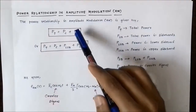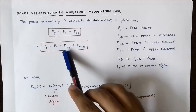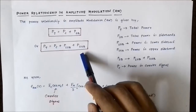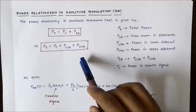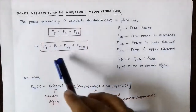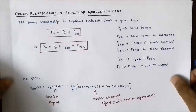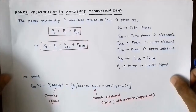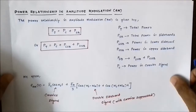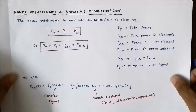The power contained in the sidebands is divided into two parts: the power in the lower sideband and the power in the upper sideband. This is the total mathematical expression for the power contained in an amplitude modulated signal. Now we will calculate the expression for power in the carrier signal and the power in the sideband signal, then the total power expression.